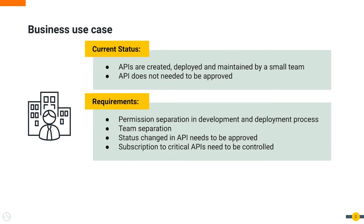One of the common requirements is to separate developers into teams — the APIs have to be visible only to developers in the same team. In other cases, critical points of the API lifecycle sometimes require approval from upper management, such as the change to published, created, or deprecated status, creating a new subscription, a new application generated, and even a new token request needs to be closely monitored and approved.